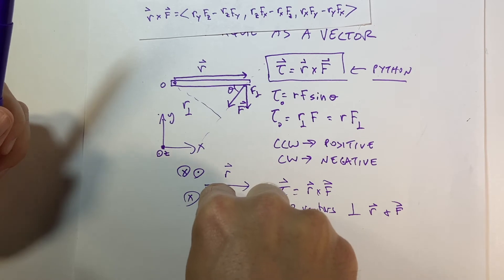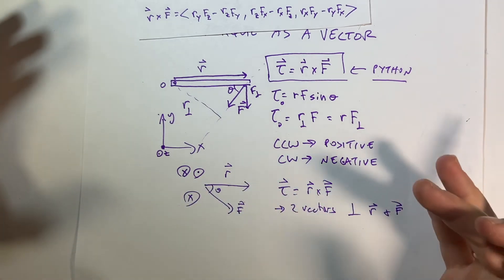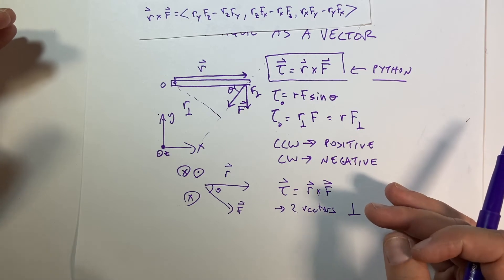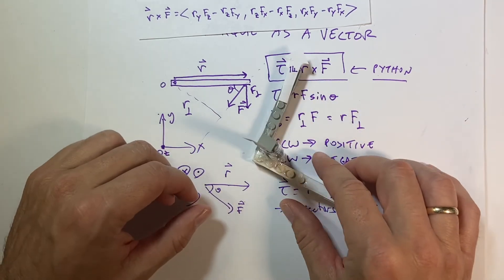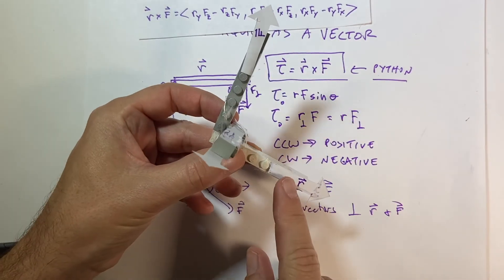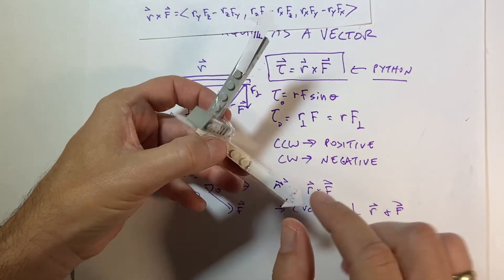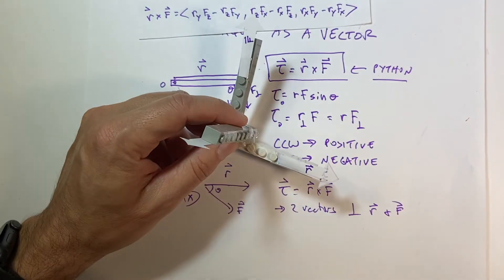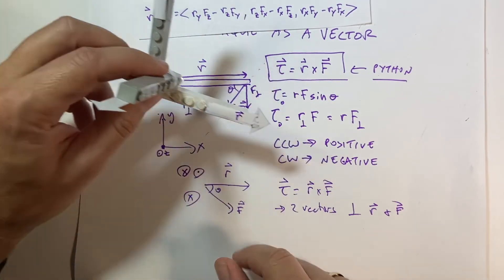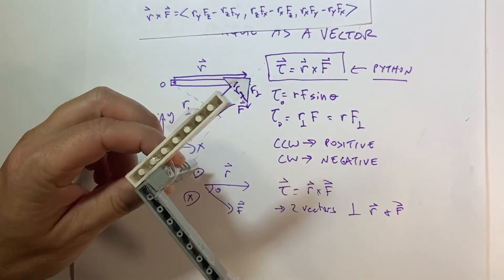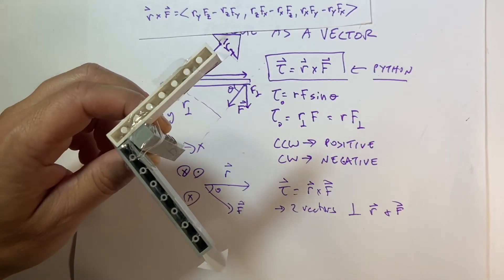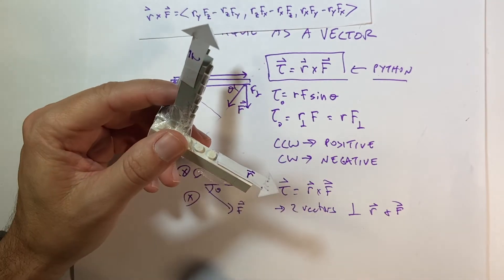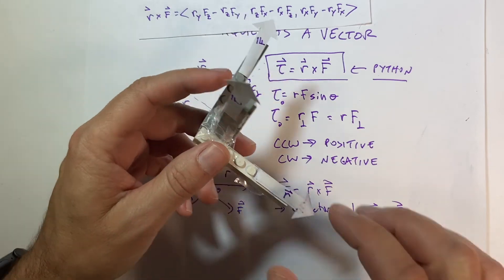That's where we get clockwise as negative torque — it has a negative z component — and counterclockwise is positive because it has a positive z component. So if this is r and this is f, that is the torque direction. Torque is a three-dimensional problem — the only way to have torque perpendicular to both r and f is to go into another dimension.